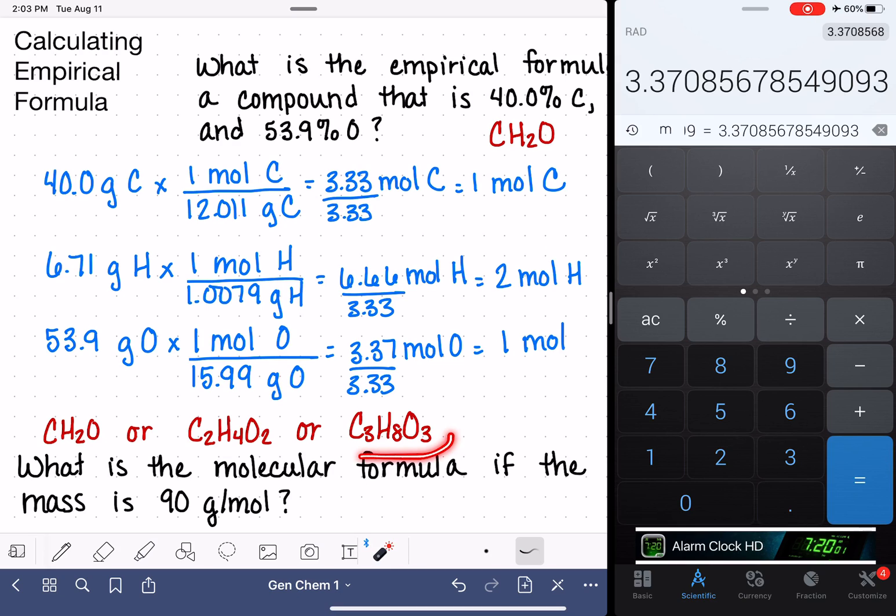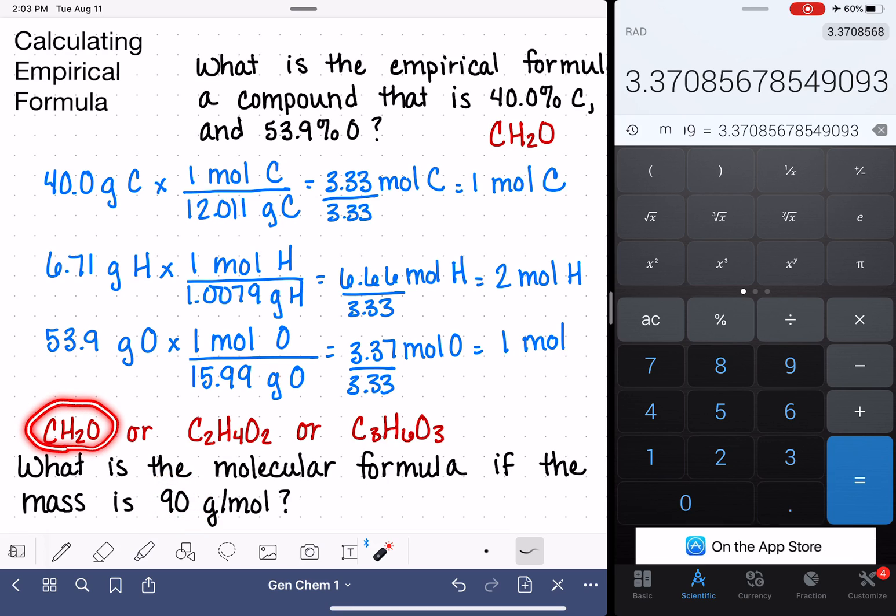If this is kind of confusing to you, you probably just need to brush up on the definition of molecular versus empirical formula. C3H6O3 looks better. So this problem is saying, if we know that the molar mass is 90 grams per mole and we know that the empirical formula is CH2O, what is the molecular formula?